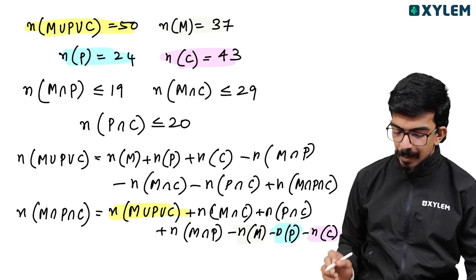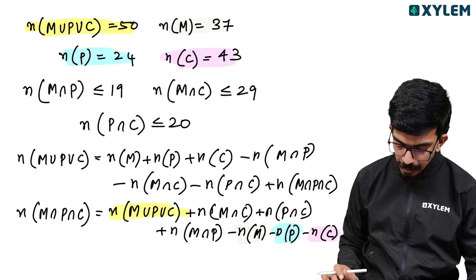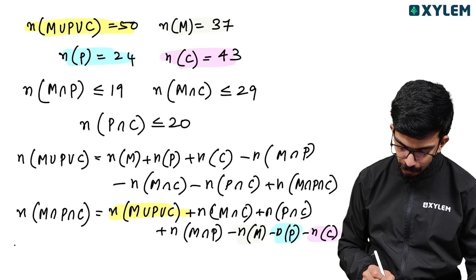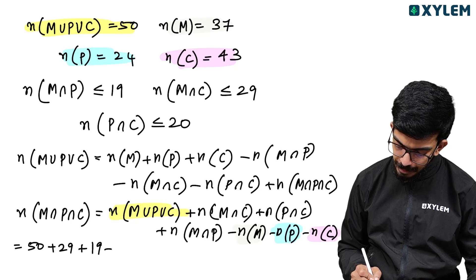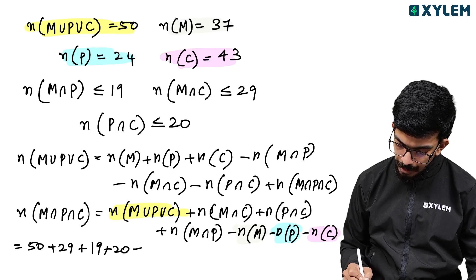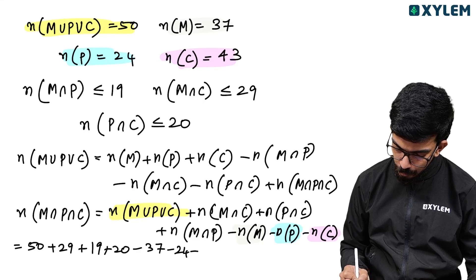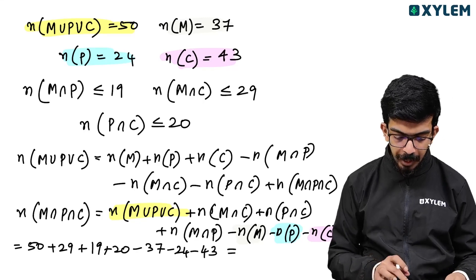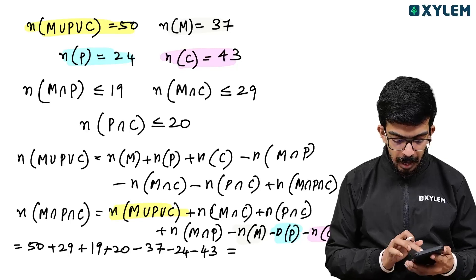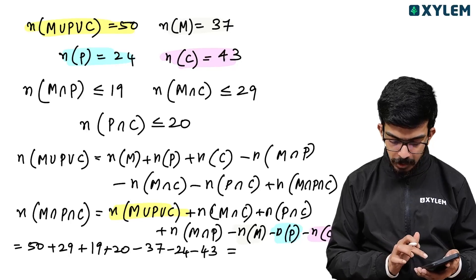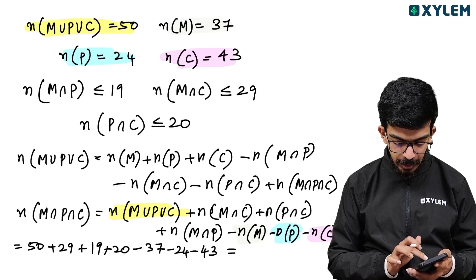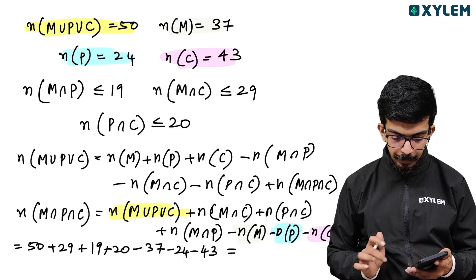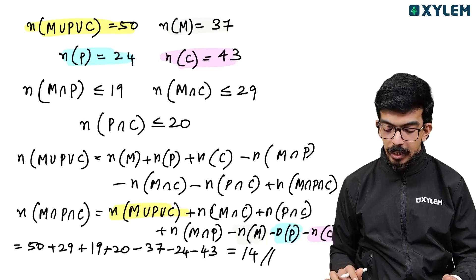Substituting the values: 50 plus 29 plus 19 plus 20 minus 37 minus 24 minus 43. That simplifies to 90 plus 29 plus 19 plus 20 minus 37 minus 24 minus 43, giving 14. So 14 is the right answer.